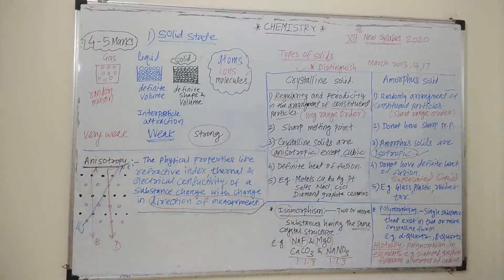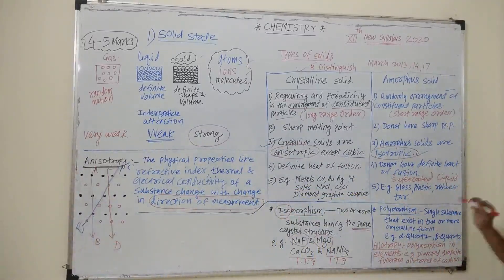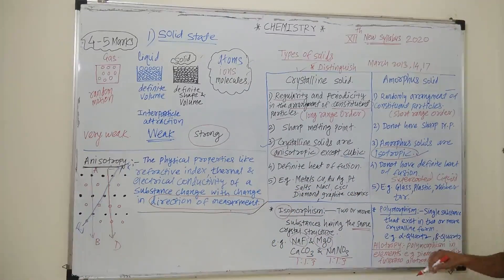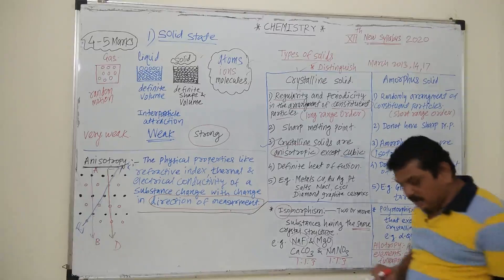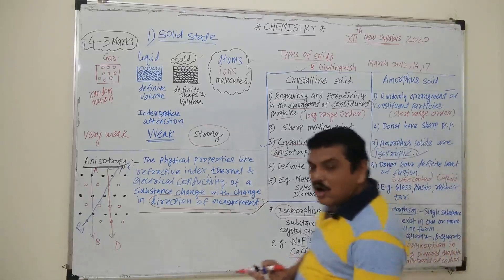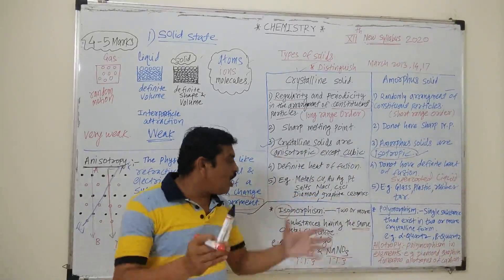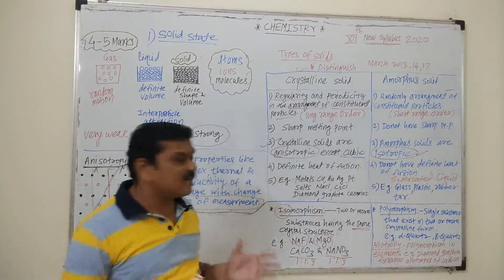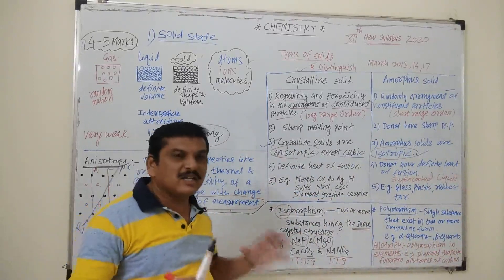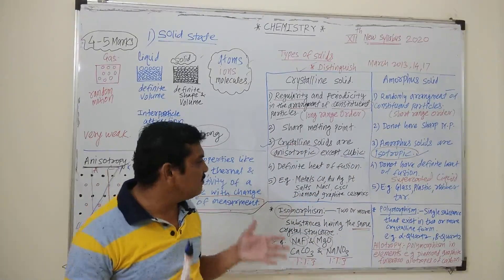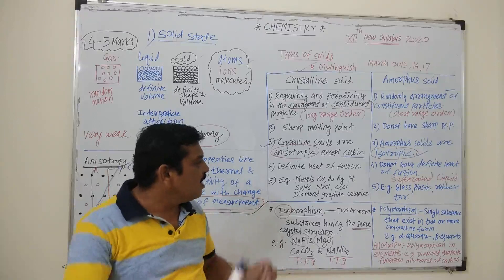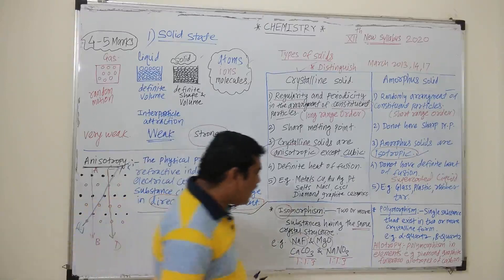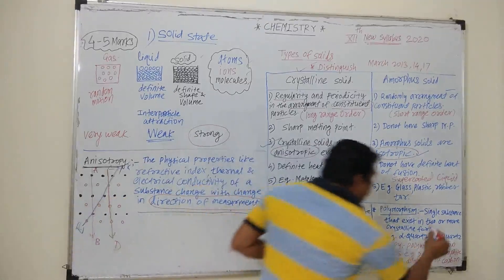Another concept is polymorphism, which means a single substance that exists in two or more crystalline forms or structures. For example, carbon can exist as alpha and beta forms.